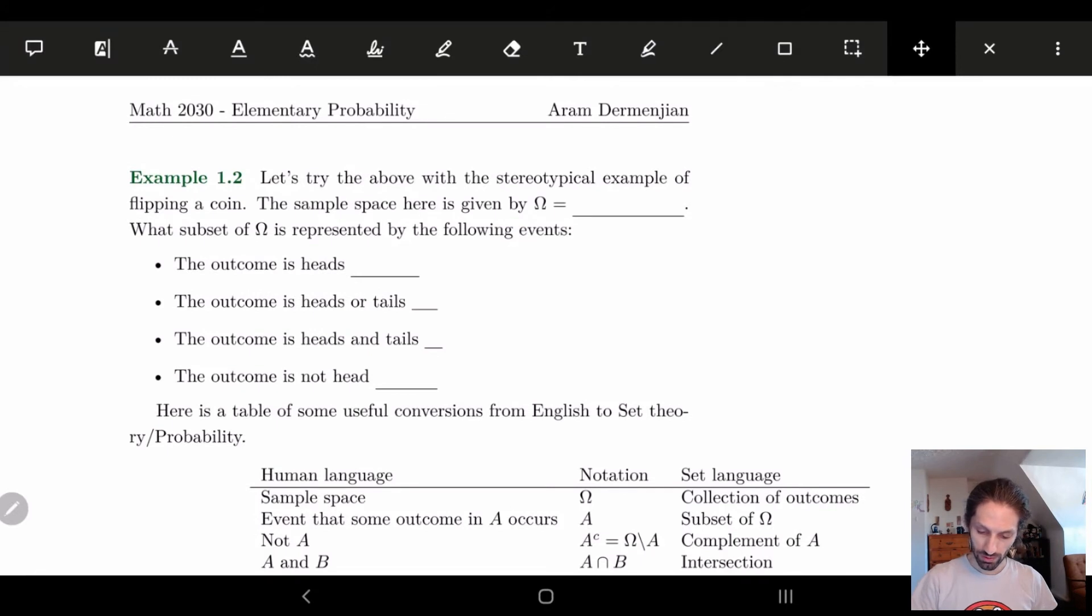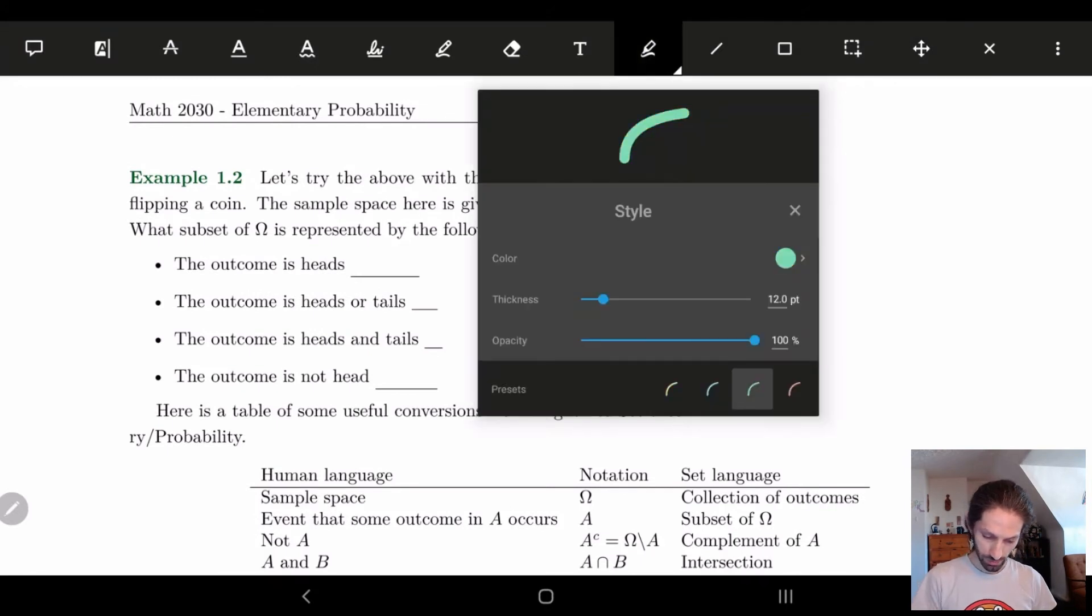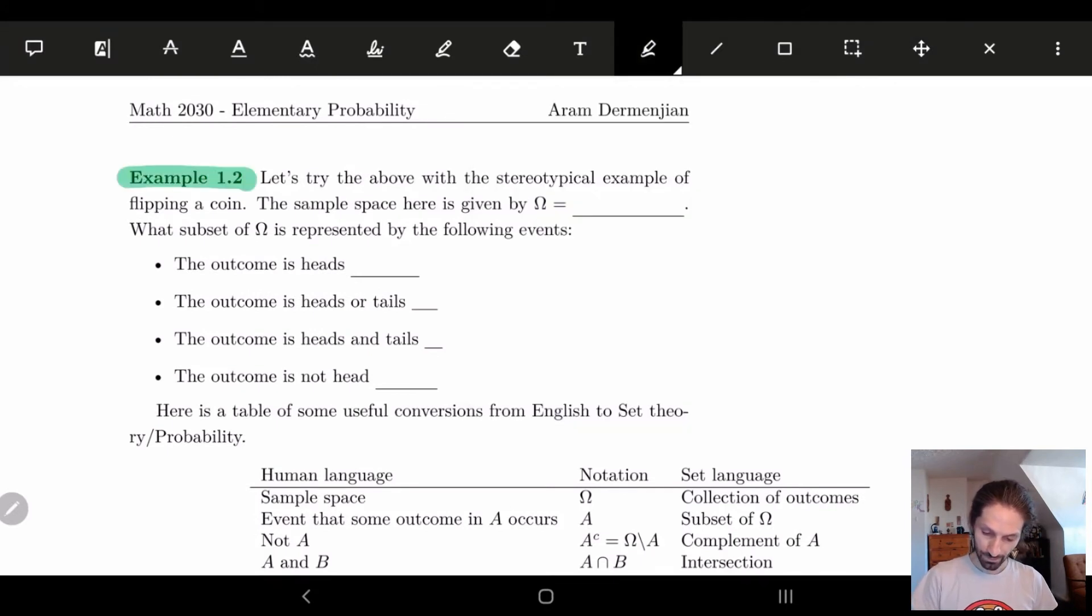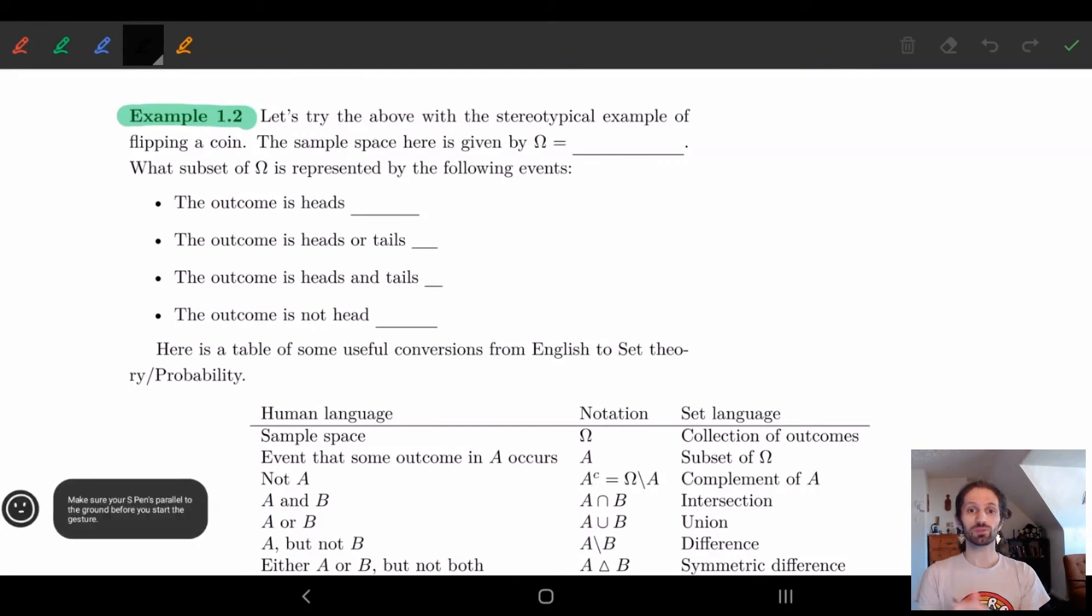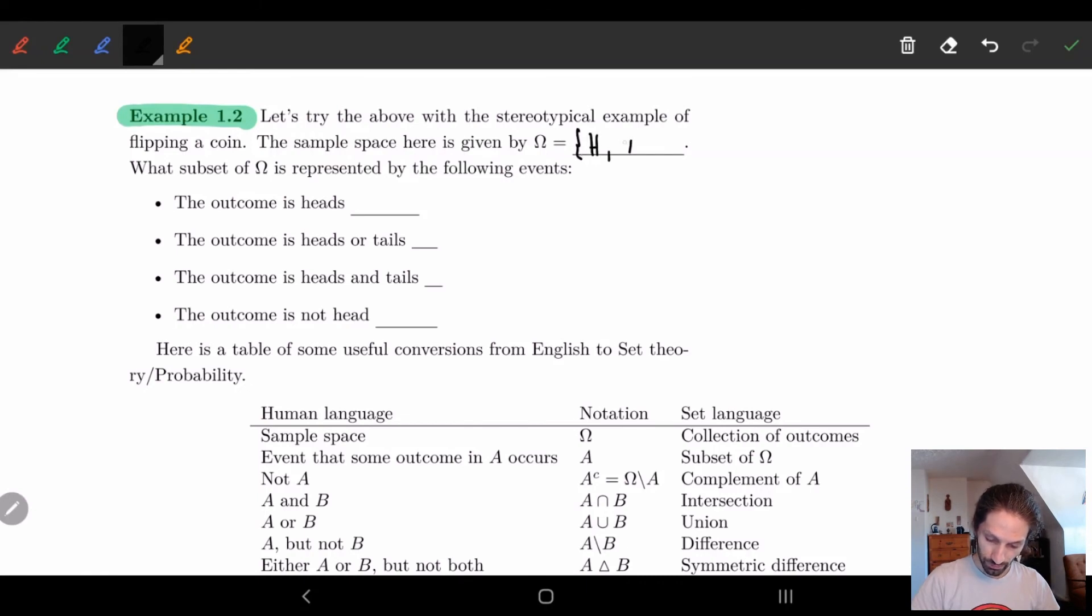So let's look at an example of these in action. Example 1.2. Okay. So what do we have? We're going to think of the stereotypical example. We're going to think about flipping a coin. So let's flip a coin. And you can kind of notice we're going to have two options, right? We either have heads or tails. That's it. So our sample space is either heads or tails.